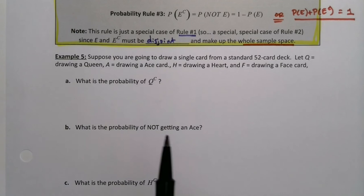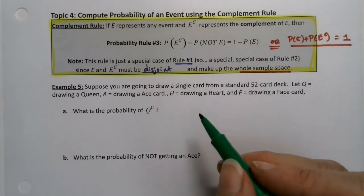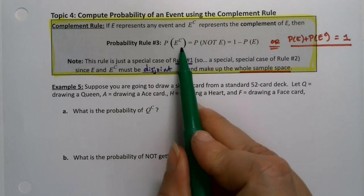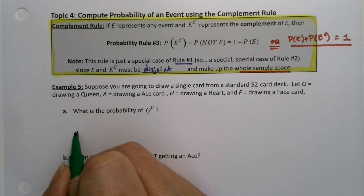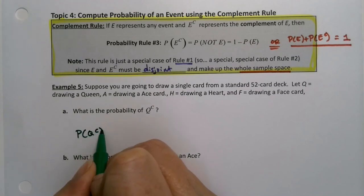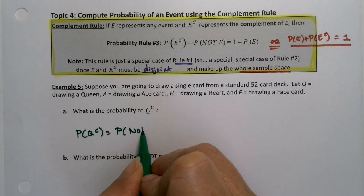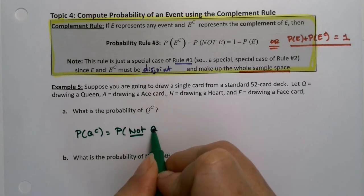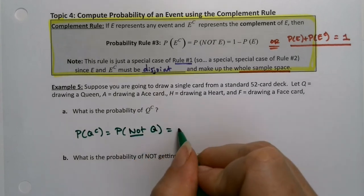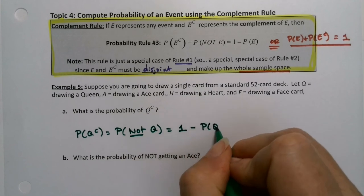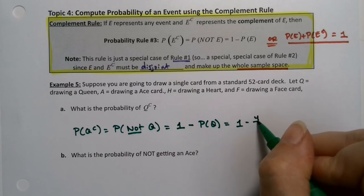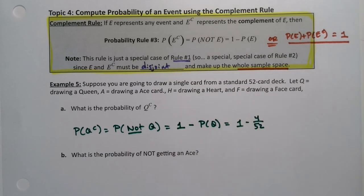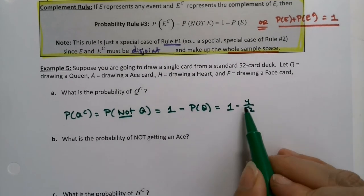Okay, so what is the probability of Q complement? All right, well the probability of Q complement will be one minus the probability of Q. So let me write that out. So the probability of Q complement is the probability of not getting a queen, right, which is one minus the probability of a queen. Okay, well there are four queens out of a 52-card deck, so that's really one minus 4 out of 52.